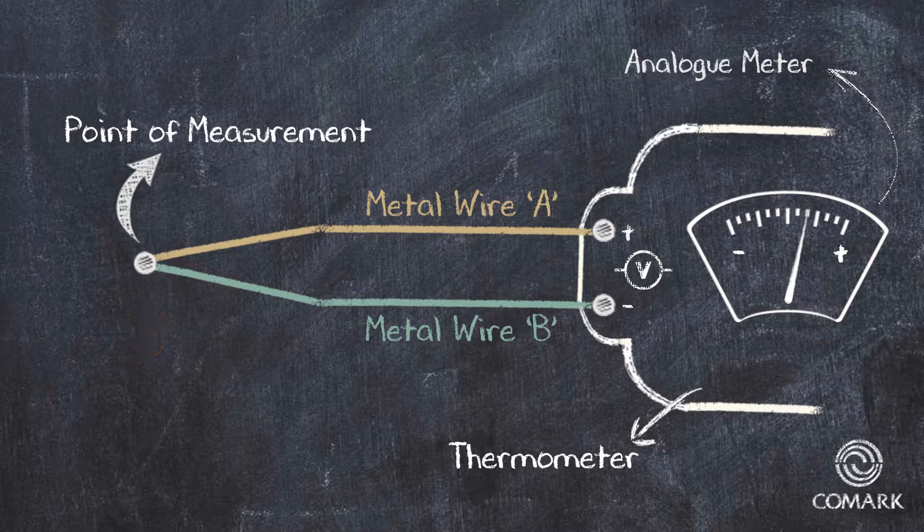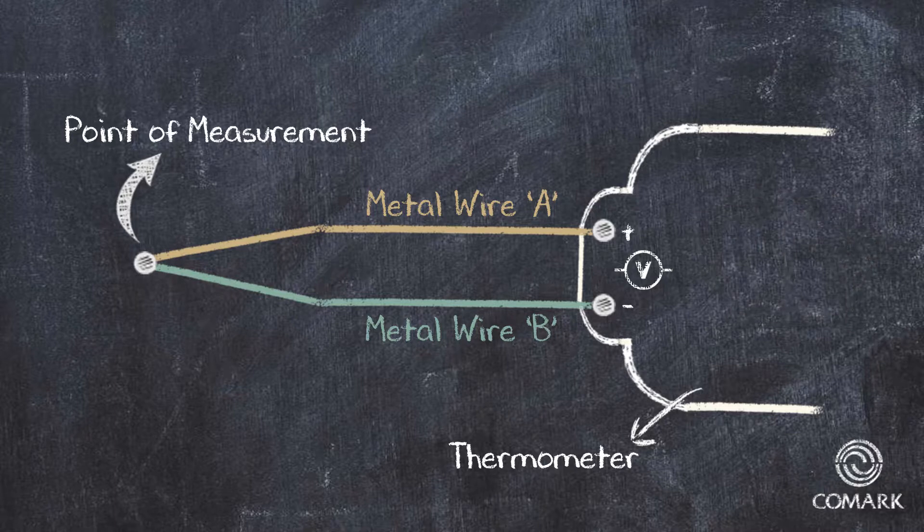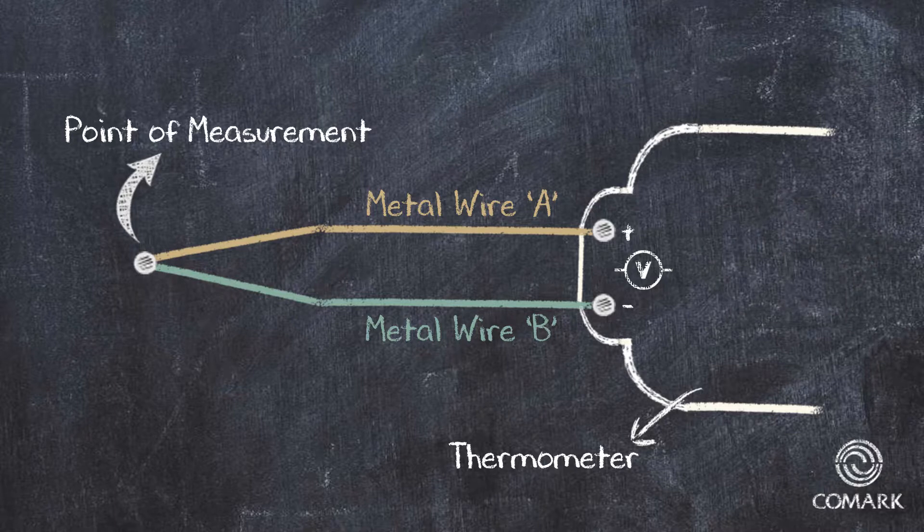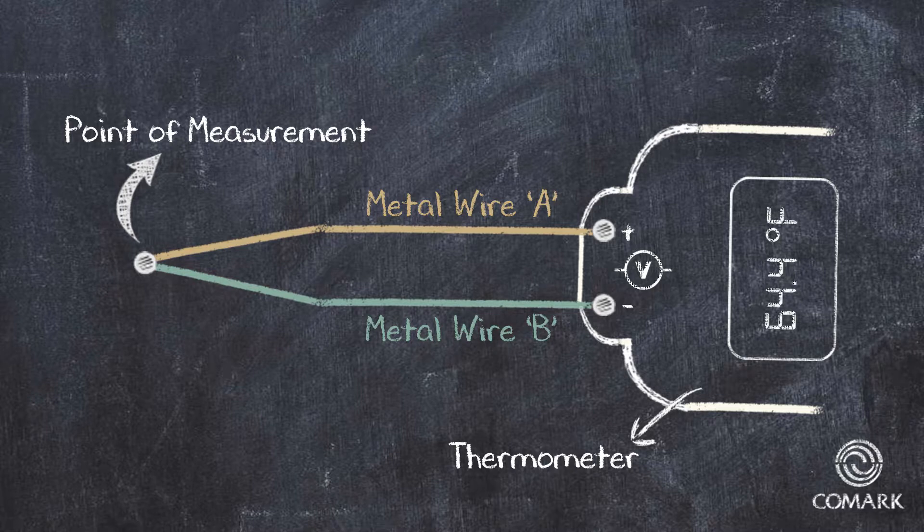The thermometer effectively measures this voltage, performs a quick calculation to correct for ambient temperature, and then uses a lookup table to determine the actual temperature at the point of measurement, which it then displays digitally for us to read.